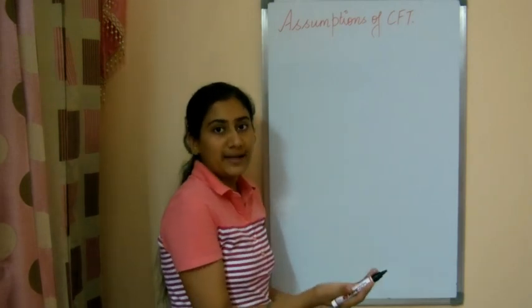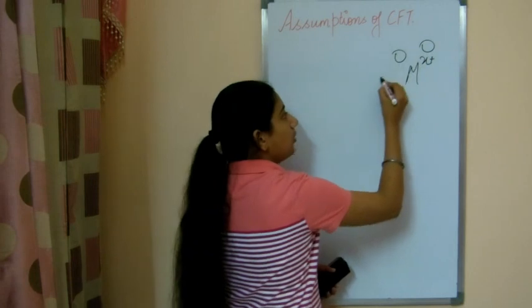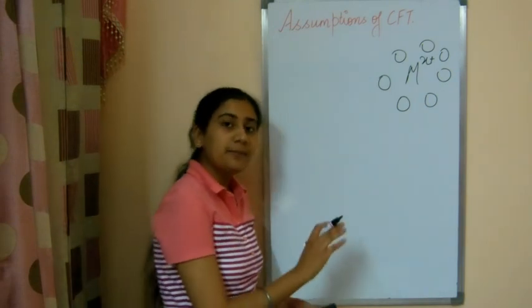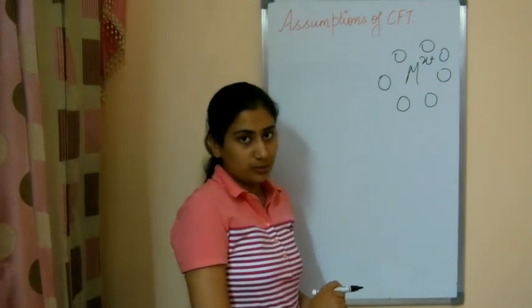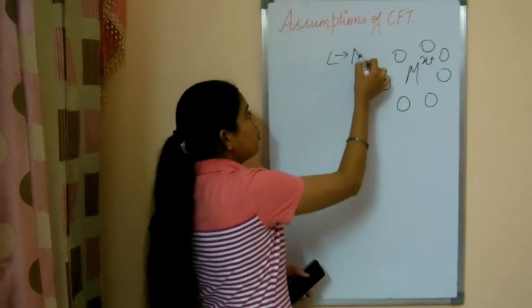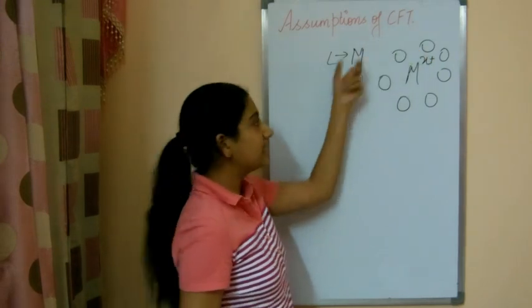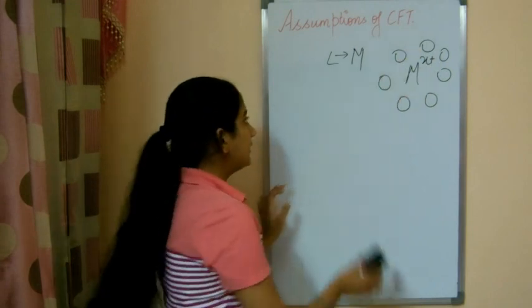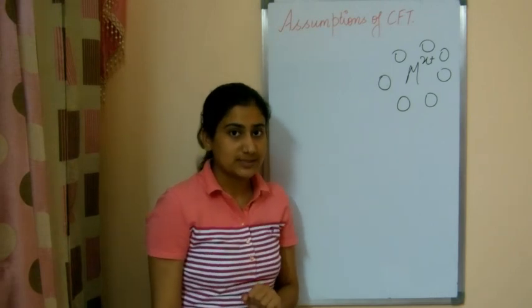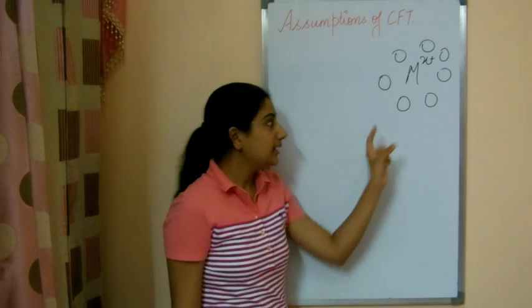In complexes or coordinate compounds, the transition metal atom or ion is surrounded by a number of ligands. According to crystal field theory, the bonding is completely different from valence bond theory. According to valence bond theory, the ligands donate electrons to the metal. But according to crystal field theory, the whole bonding in coordinate compounds depends upon electrostatic forces — the whole bonding is based upon electrostatic attractions.